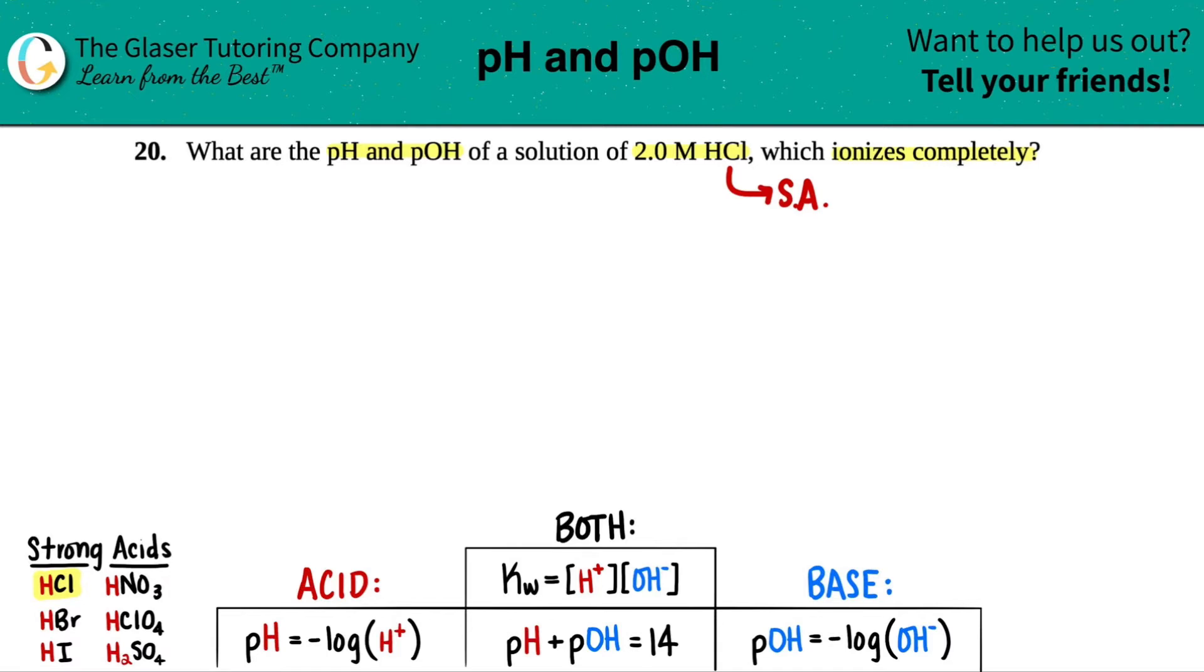So the next thing is, we just have to show the ionization, right? What does HCl break down into? Well, HCl breaks down 100% into two ions. But the thing is now, what are the two ions?